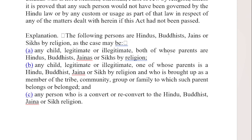Under clause (a), if any child — whether legitimate or illegitimate — has both parents who are Hindu, Buddhist, Jain, or Sikh by religion, they shall be considered Hindu and this act will be applicable to them. Under clause (b), if any child — legitimate or illegitimate — has one parent, whether mother or father, who is Hindu, Buddhist, Jain, or Sikh, they shall be applicable to this act.